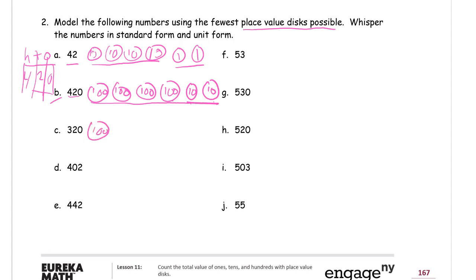This one here is going to take 3 of those hundreds. 2 tens make the 20. It's 320, and that's 3 hundreds, 2 tens.